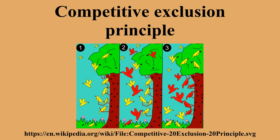In ecology, the competitive exclusion principle, sometimes referred to as Gause's law of competitive exclusion or just Gause's law, is a proposition that states that two species competing for the same resource cannot coexist at constant population values. If other ecological factors remain constant, when one species has even the slightest advantage or edge over another, then the one with the advantage will dominate in the long term.